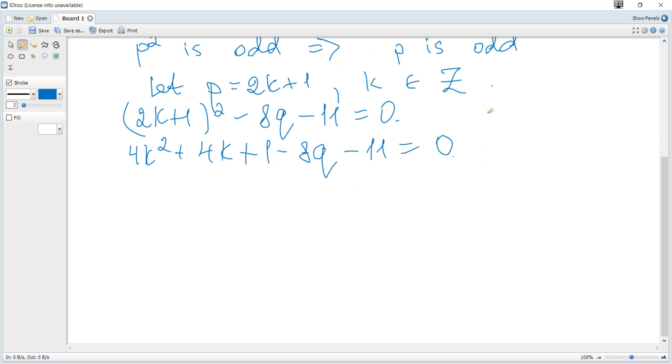We need a contradiction. How can we get it? We can see that 1 - 11 is -10. Let's move this 10 to the right. We can divide each term by 2. So we get 2K² + 2K - 4Q = 5.